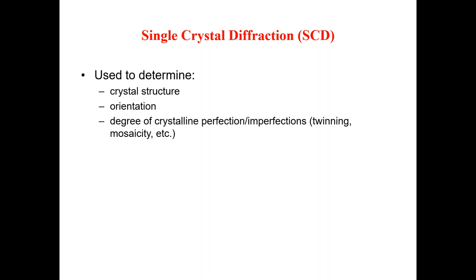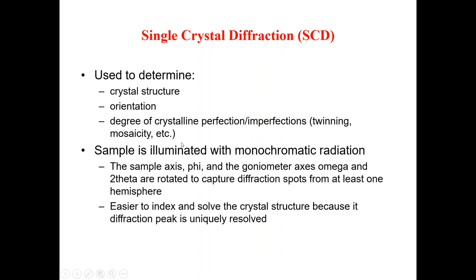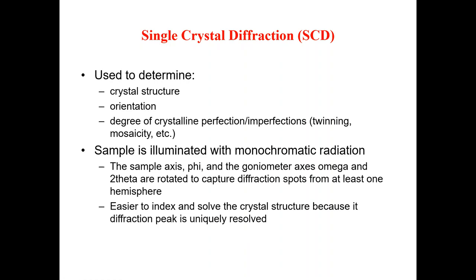Single crystal diffraction, called SCD, is used to determine crystal structures, orientations, and degree of crystalline perfection or imperfection — such as twinning and mosaicity. In this technique, the sample is illuminated with monochromatic radiation, and the sample axis phi along with the goniometer axes omega and 2-theta are rotated to capture diffraction spots from at least one hemisphere. This makes it easier to solve the crystal structure because each diffraction peak is uniquely resolved.